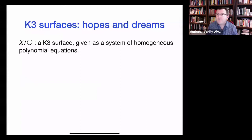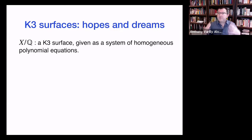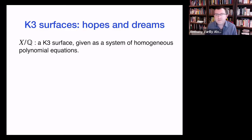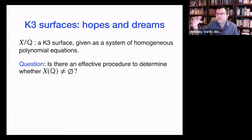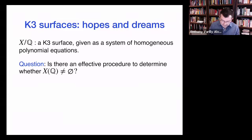I want to talk about some hopes and dreams for K3 surfaces and tell you a story of what I think the conjectural picture is converging to. I want to think of a K3 surface given to us by some system of homogeneous polynomial equations over Q. The sort of thing people in the seminar may be interested in is detecting whether such an object has a rational point or not. It would be great if there were an effective procedure — some algorithm with an a priori bound on running time — that could determine whether you have a point or not.